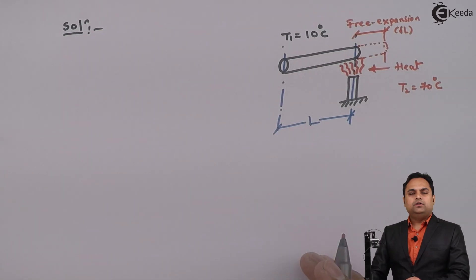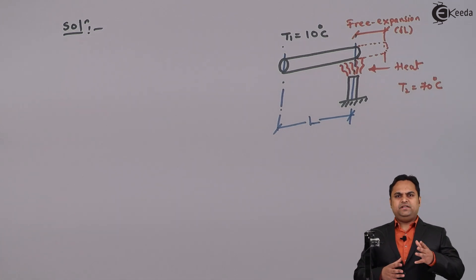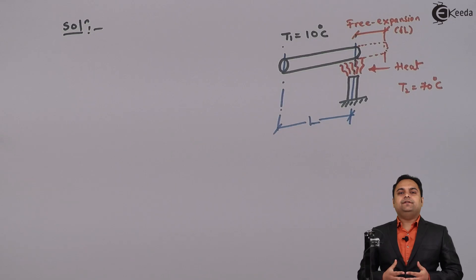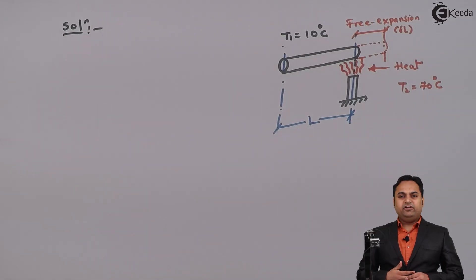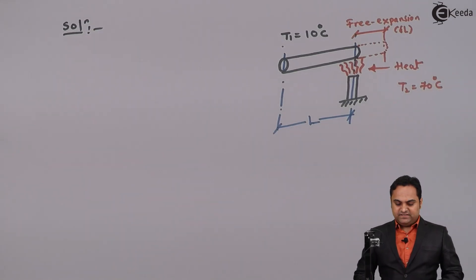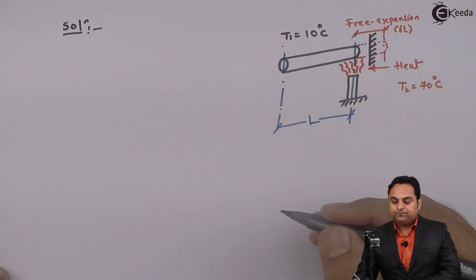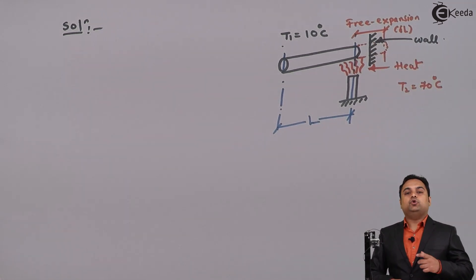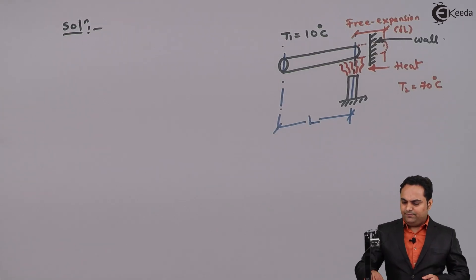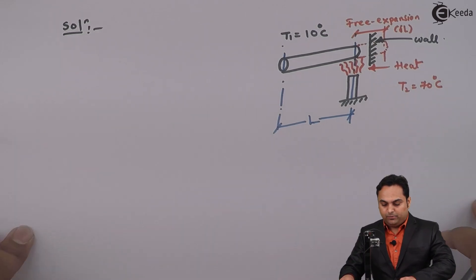This expansion of the rod is called free expansion, denoted by delta L. If we heat the rod and allow it to expand freely based on its free expansion value, there will be no stress developed. But if we try to stop this free expansion — for example, by having a wall — when the free expansion is prevented, temperature stress will be developed in the metal rod.